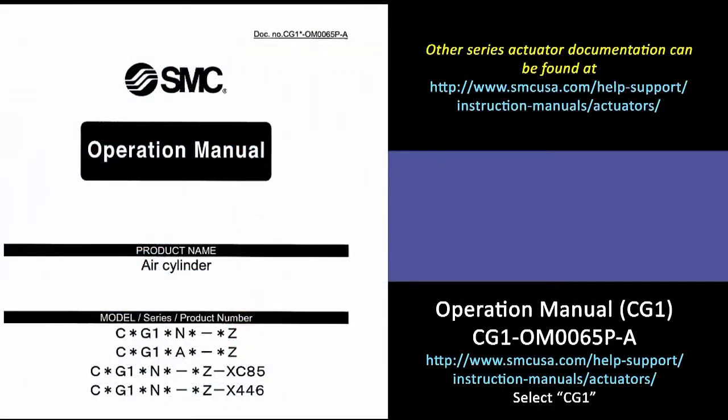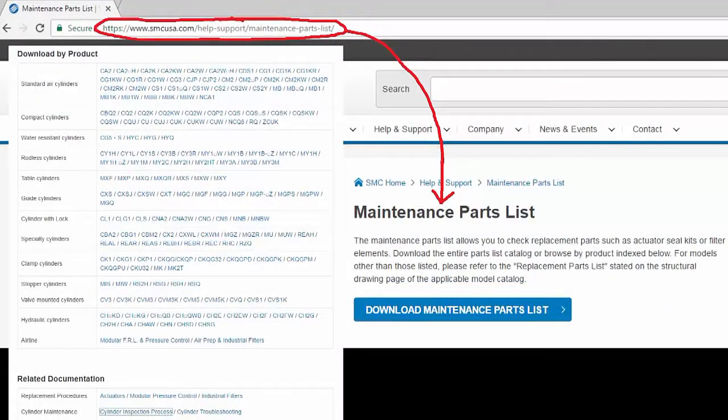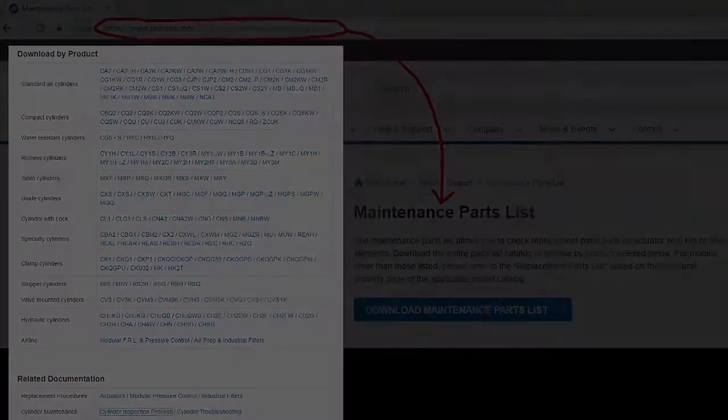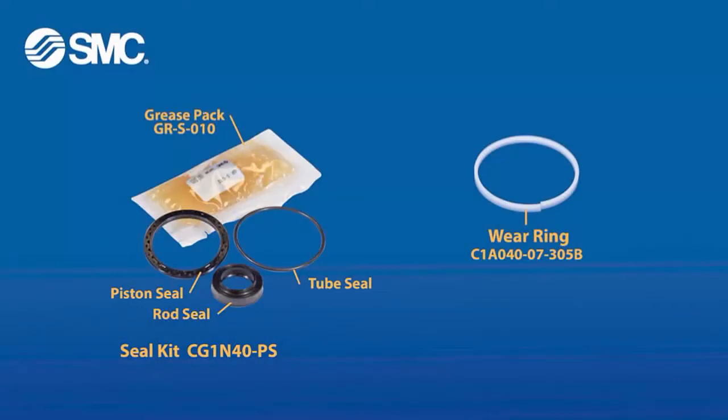To rebuild any cylinder, get the operation manual so you can do the rebuild safely and properly. For most of our actuators, there is an SMC maintenance parts list on the web. It has part ordering info for the rebuild kits. These are the part numbers for our rebuild. Make sure you have the right replacement parts for your cylinder.